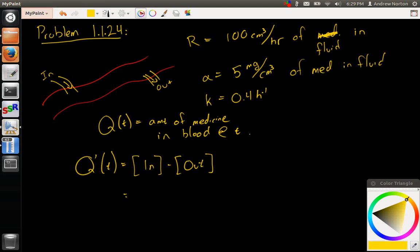Well, what's going in? That is my rate, and then my density in that rate. So we have the amount in, that's good. And then how fast is it leaving? Well, that's proportional to the amount present in the bloodstream, which would be Q of T.